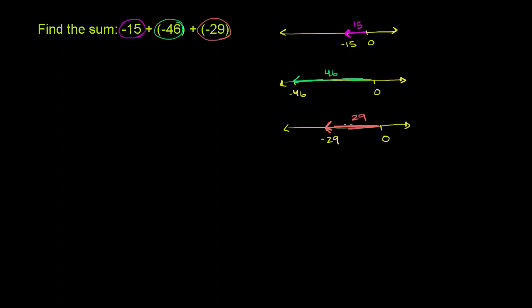We've now represented all of these numbers and can see what their absolute values are. Now let's think about what happens when you add them. One way to think about adding these numbers is by adding these arrows — putting one arrow after another, starting where the previous arrow leaves off. Let's draw that; it's going to be a longer arrow now.